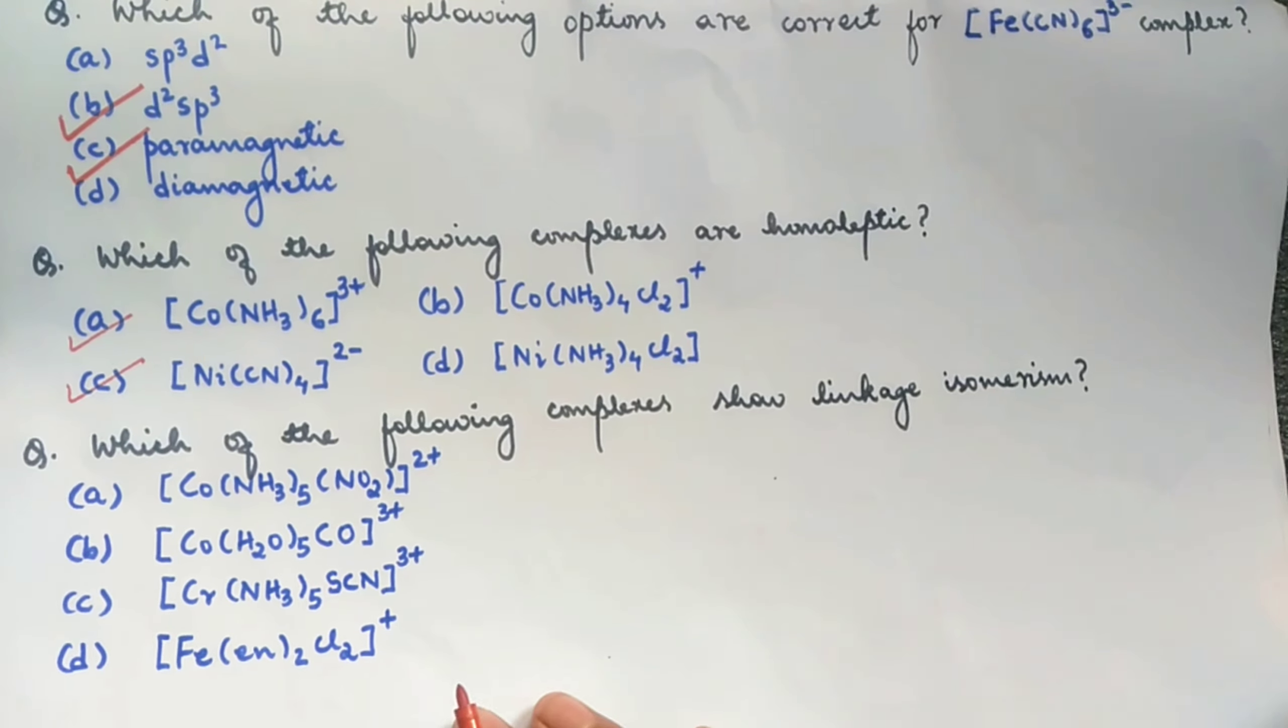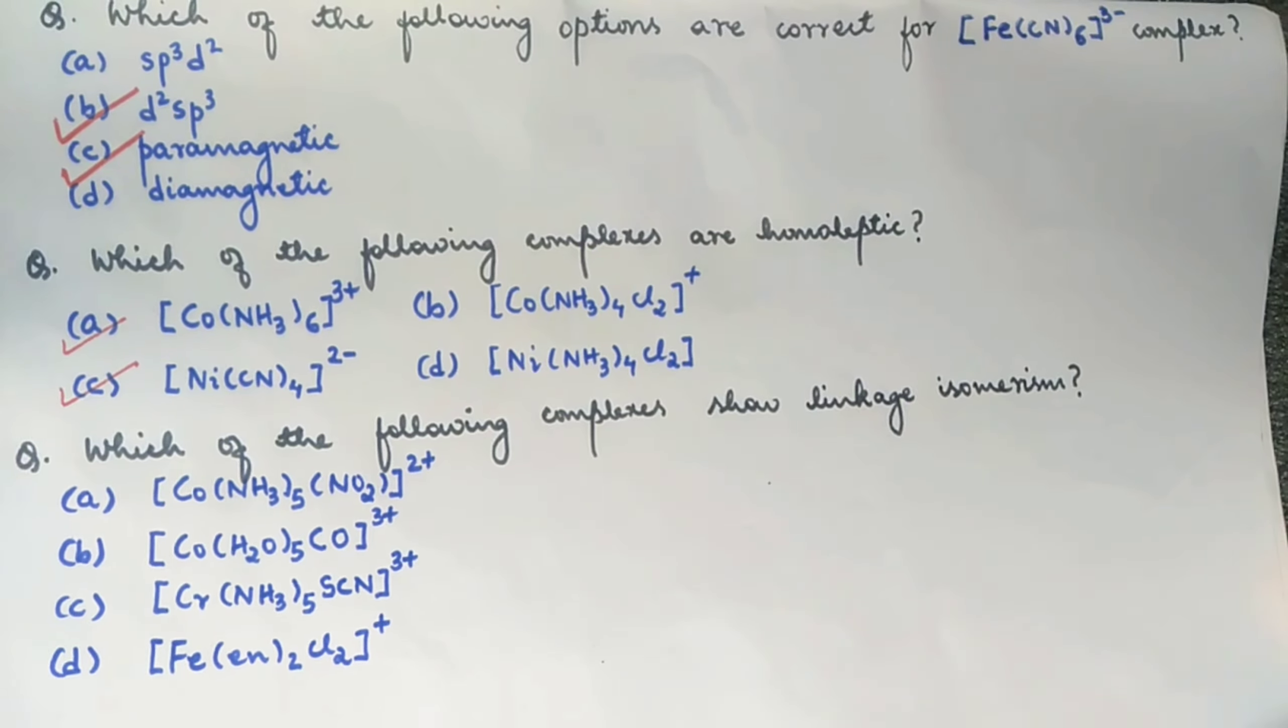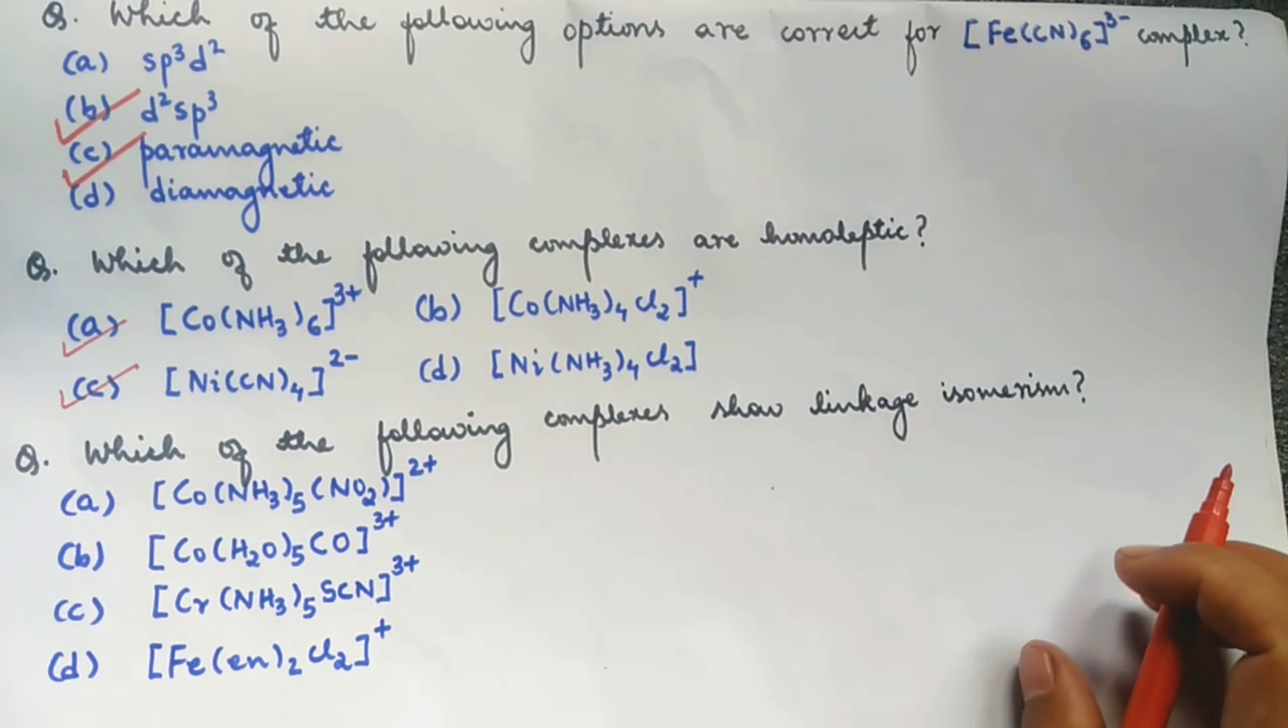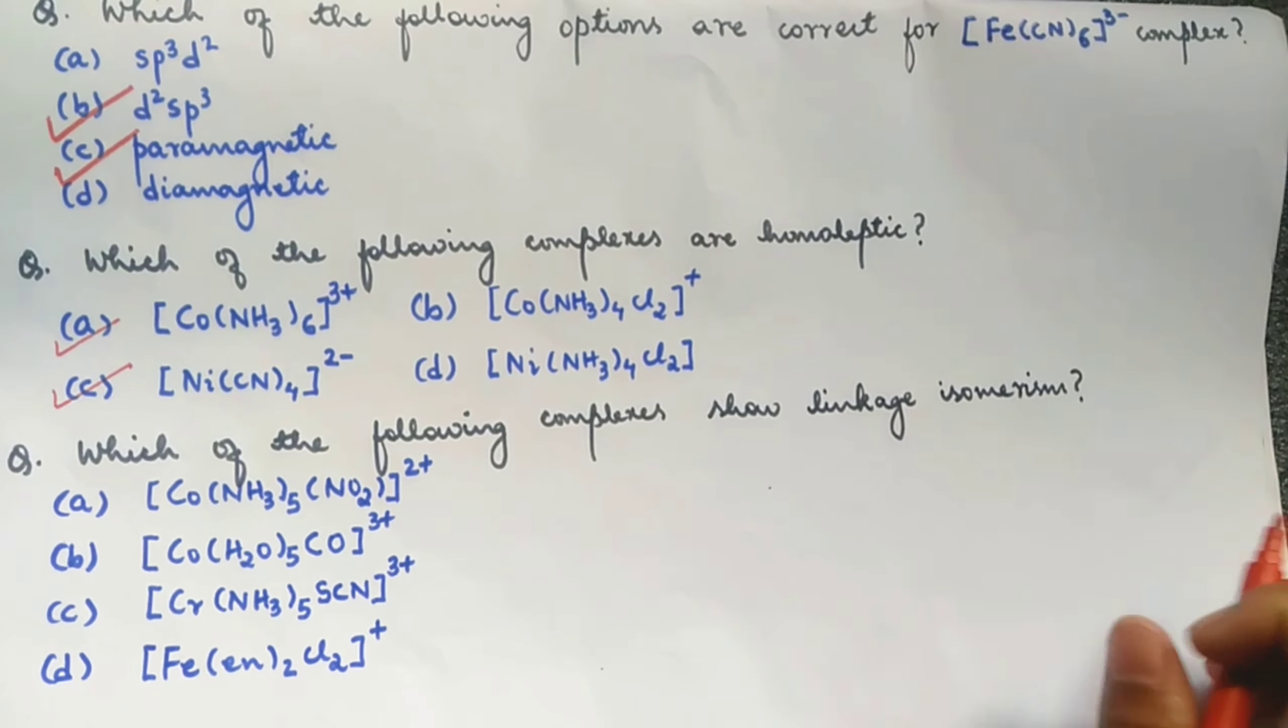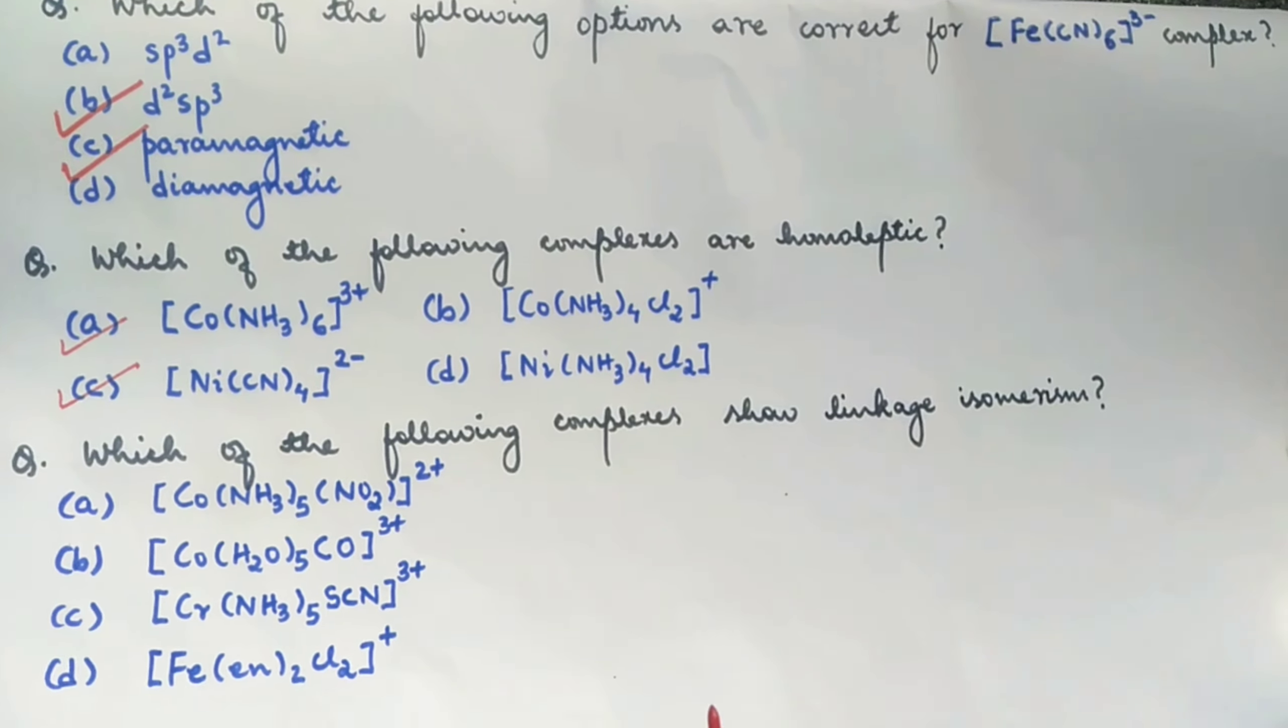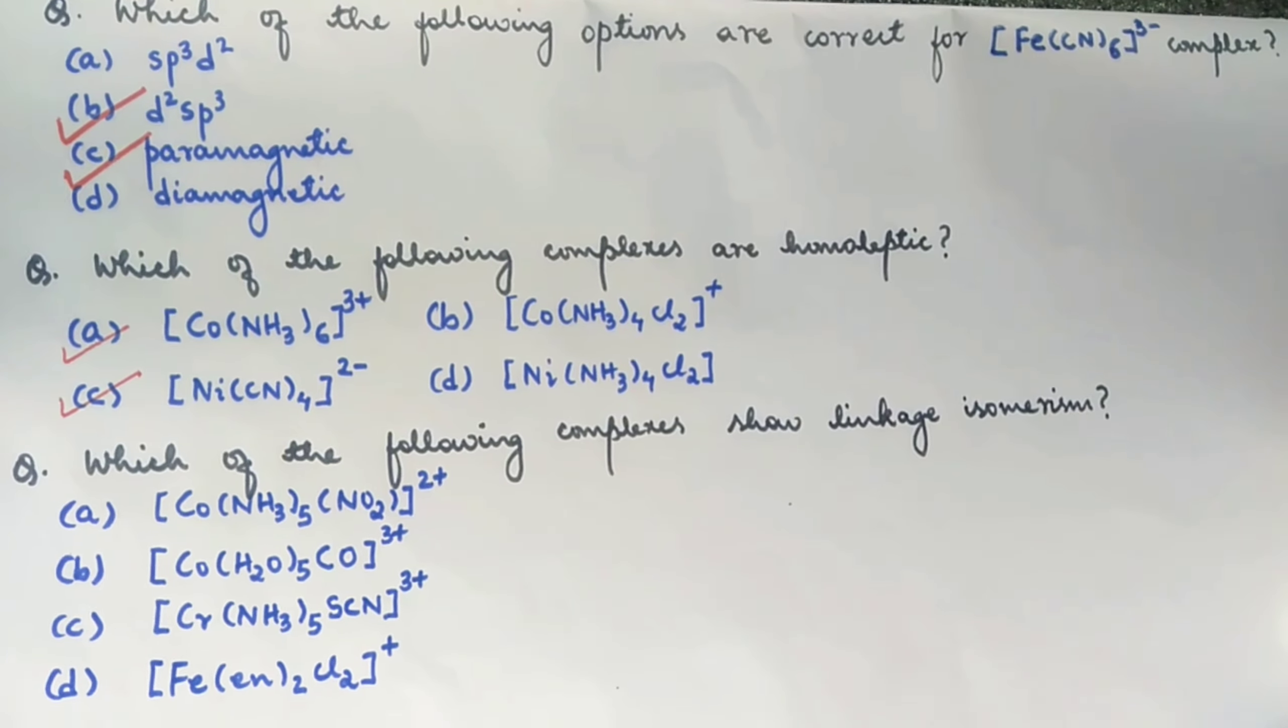Now, another question. Which of the following complexes show linkage isomerism? Linkage isomerism is shown by those complexes which have ambidentate ligand. Now, what is this ambidentate ligand? It is that ligand which has two donor atoms.